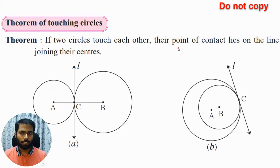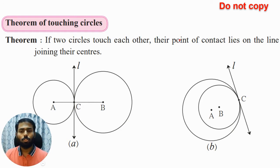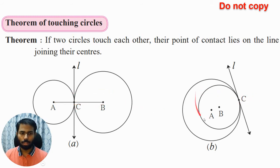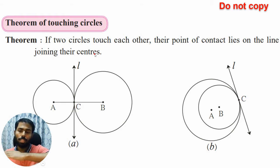Now there is a theorem of touching circles. The theorem states: if two circles touch each other, their point of contact lies on the line joining their centers. We should know what is the meaning of point of contact. If two circles touch each other, the point of contact lies on the line joining the centers. On the left-hand side, the two centers are A and B — joining A and B, point C lies on that line.